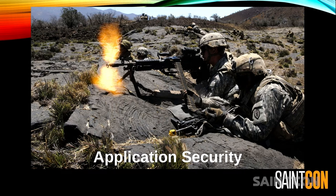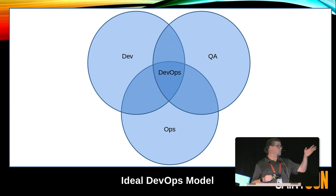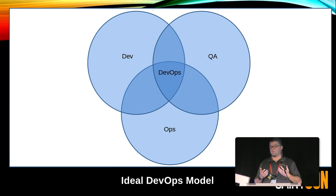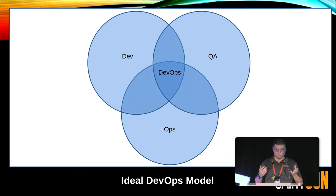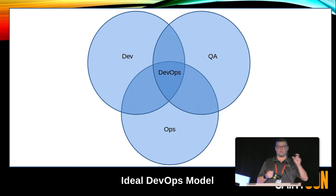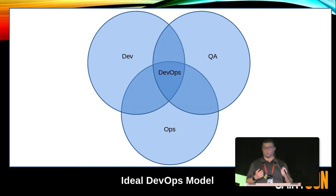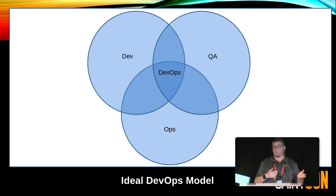If you look at the DevSecOps model, it says Dev, QA, Ops, with DevOps in the middle. It's been a trend lately to call that DevSecOps — a good nod that security is becoming important. The DevOps aficionados will say security was always in the manifesto. It's a team sport. You're part of the team. You need to integrate into this DevSecOps model because that's how software is done — you're not going to be able to change that.